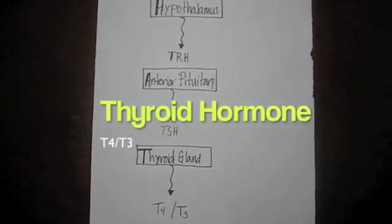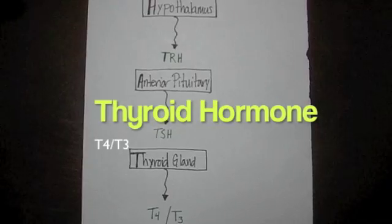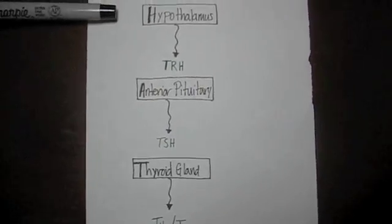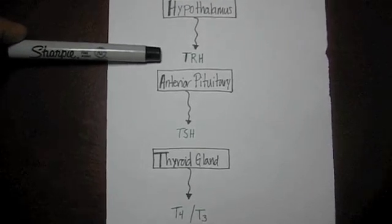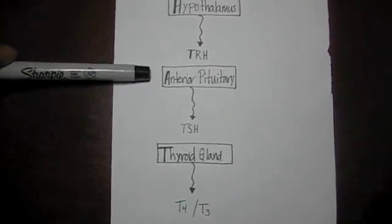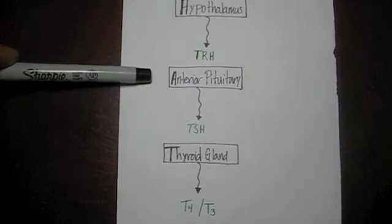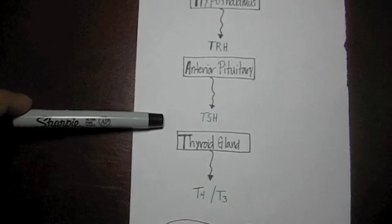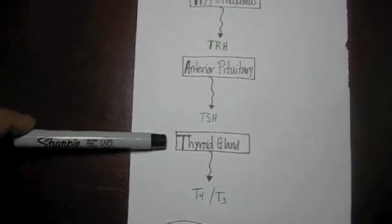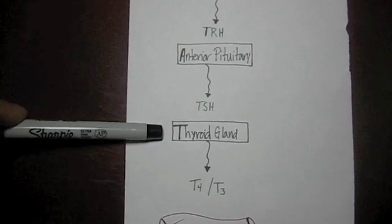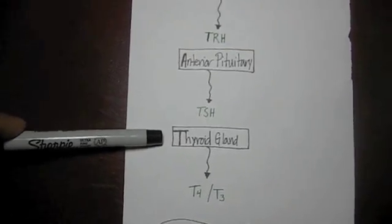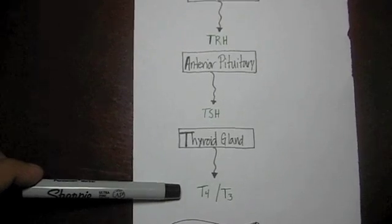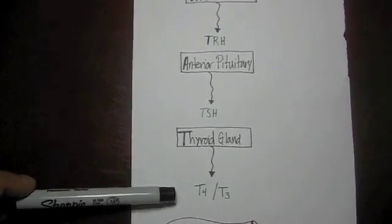Now we will talk about the thyroid axis. The hypothalamus releases TRH, which stimulates the anterior pituitary, which releases TSH, which then affects the target organ — in this case, the thyroid gland — which secretes T4 and T3 into the bloodstream.